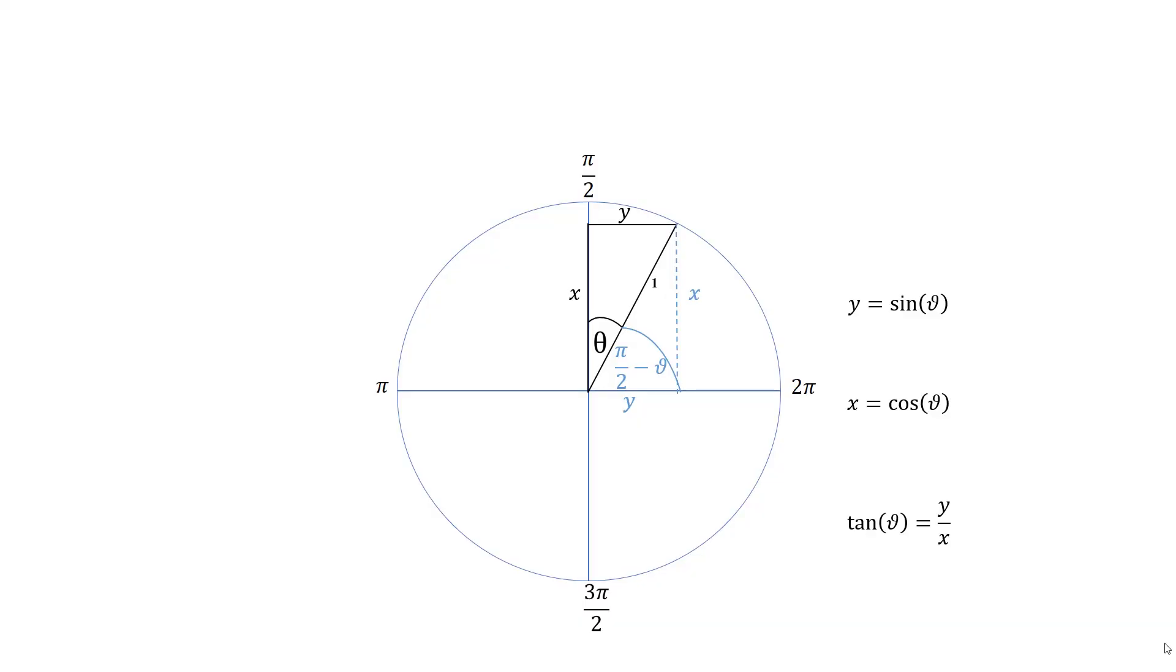Now we can use this triangle to find out what the values are going to be. So sine of π/2 minus theta is going to be equal to x, remember sine is that vertical distance. Cos of π/2 minus theta, the horizontal distance is going to be y.